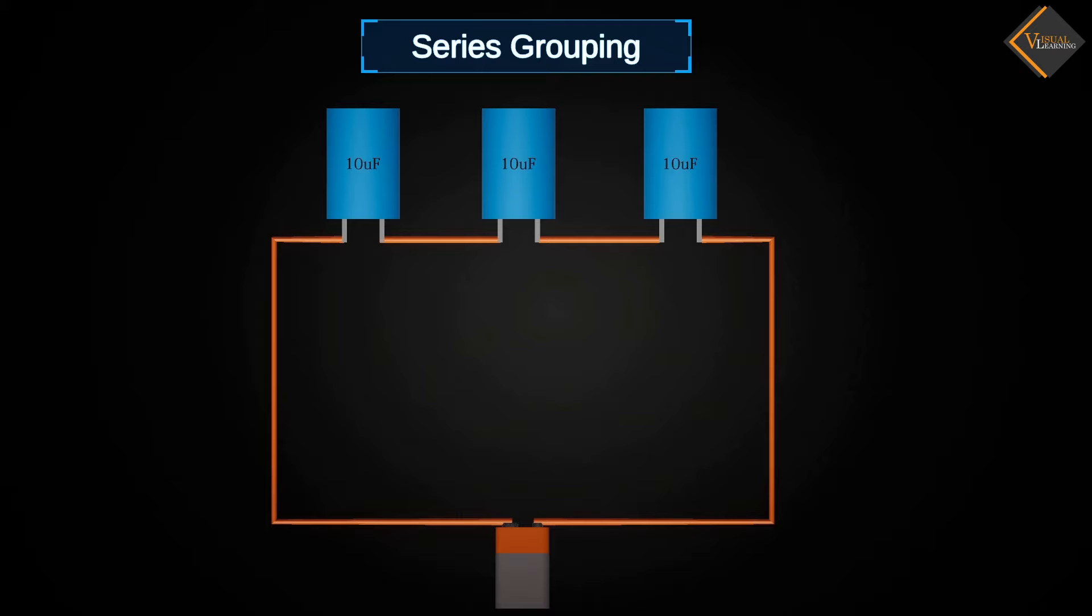The capacitance of these three capacitors is denoted as C1, C2 and C3. And the potential of the battery is denoted as V.